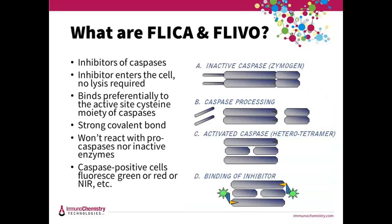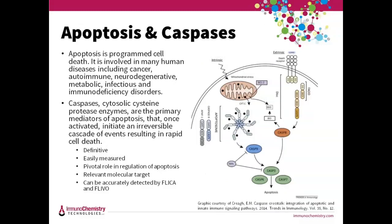So, what are FLICA and FLIVO? They're biomarkers that measure caspase activity. They are labeled caspase inhibitors and form a covalent bond with active caspase enzymes. They're non-cytotoxic and bind preferentially to the active site cysteine of caspases, thereby enabling visualization of caspase activity in vitro for FLICA or in vivo for FLIVO. Once you add them to the media or inject directly into the animal, they bind to the active caspase and form a strong covalent bond but won't react with pro-caspases or inactive enzymes, and then they remain inside the cell for detection.